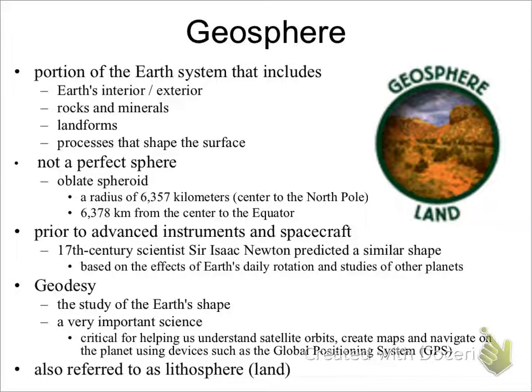Sir Isaac Newton, a 17th century scientist, predicted a similar shape prior to the advancement of instruments and spacecraft. His predictions were based on the effects of Earth's daily rotation and studies of other planets.